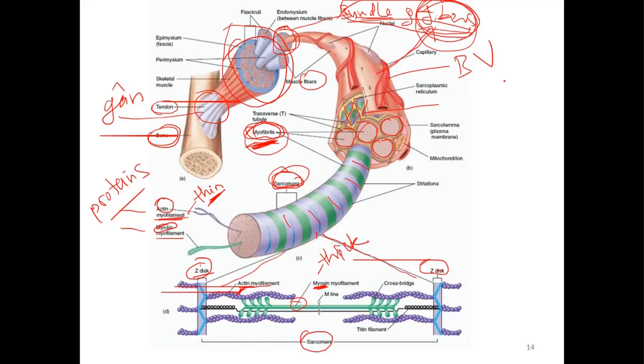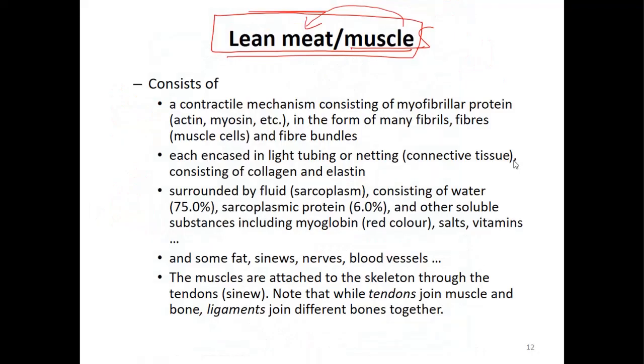Now we go back to the text so we can see. Lean meat or muscle consists of a contractile mechanism consisting of myofibrillar proteins including actin, myosin, and so on - myofibrillar proteins.